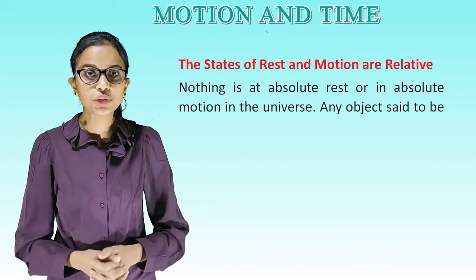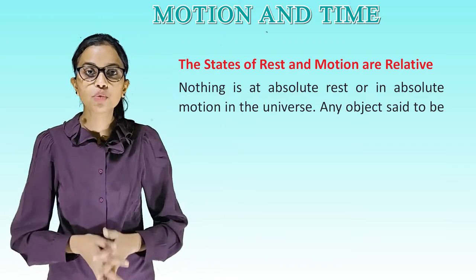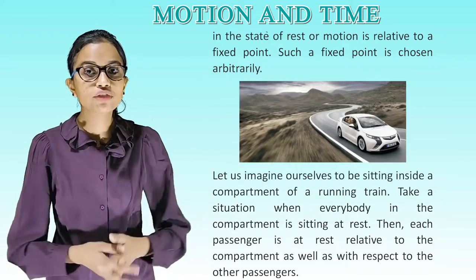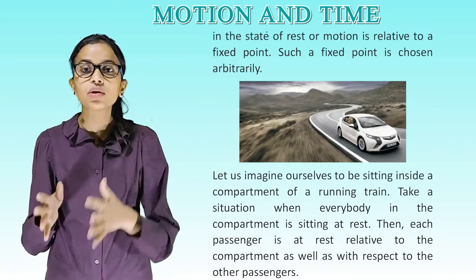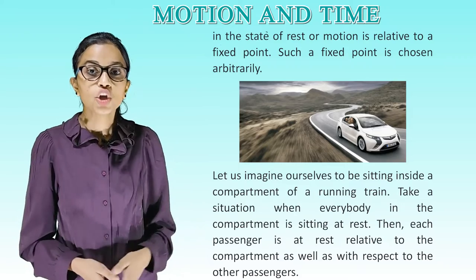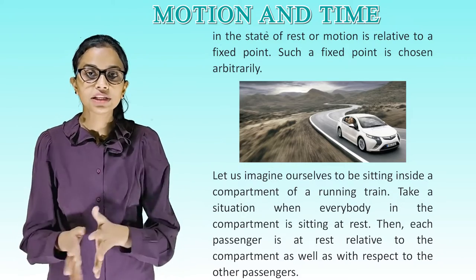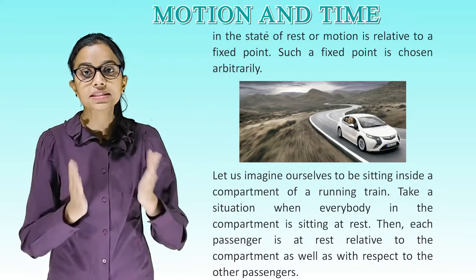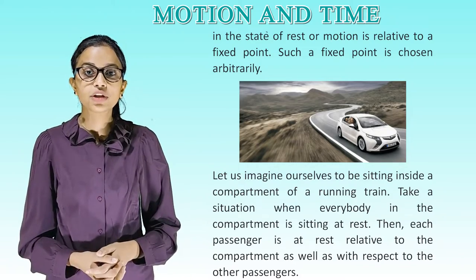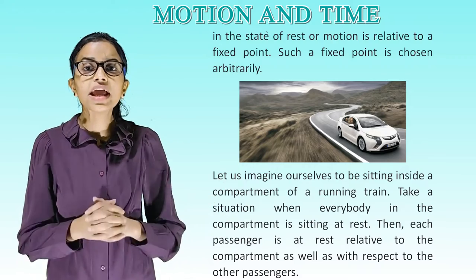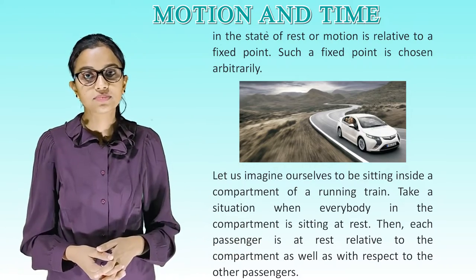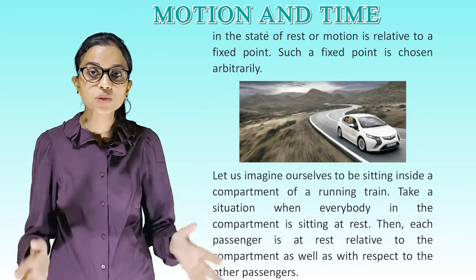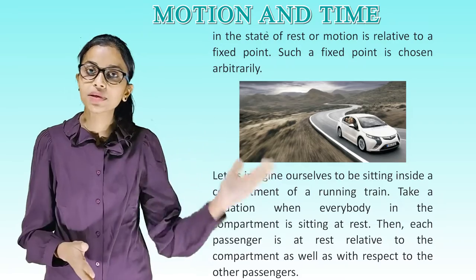The states of rest and motion are relative. Nothing is at absolute rest or in absolute motion in the universe. Any object said to be in the state of rest or motion is relative to a fixed point. Such a fixed point is chosen arbitrarily. Let us imagine ourselves to be sitting inside a compartment of a running train. Take a situation when everybody in the compartment is sitting at rest. Then each passenger is at rest related to their compartment as well as with respect to other passengers.